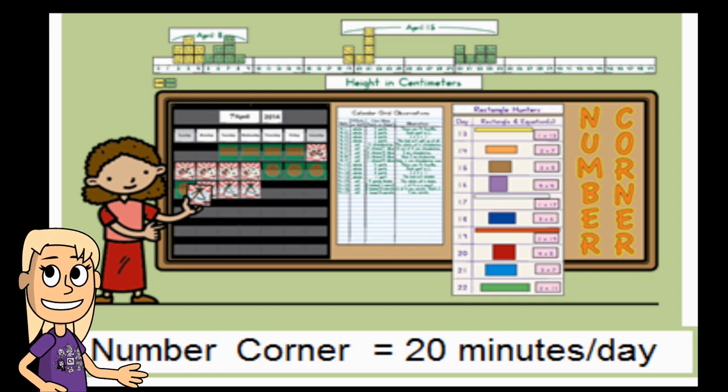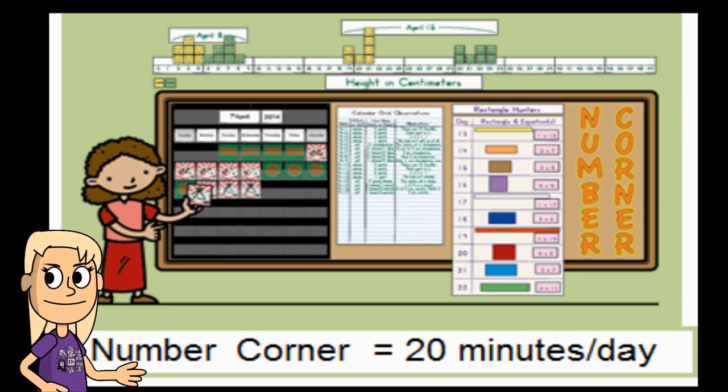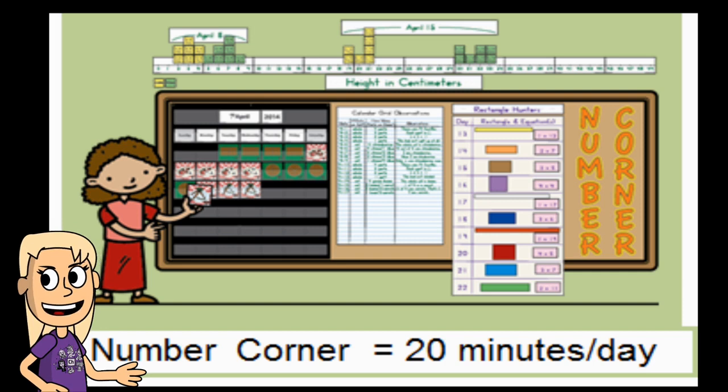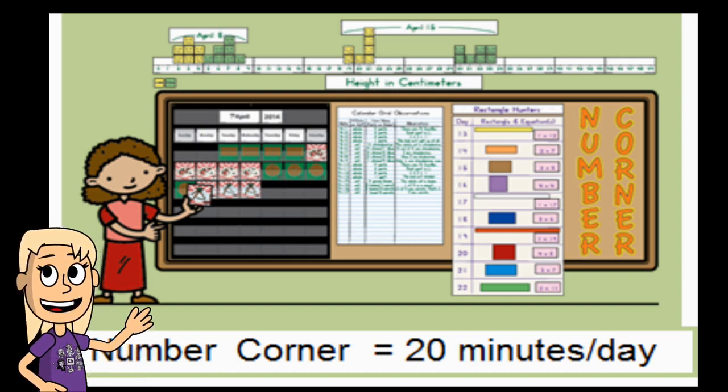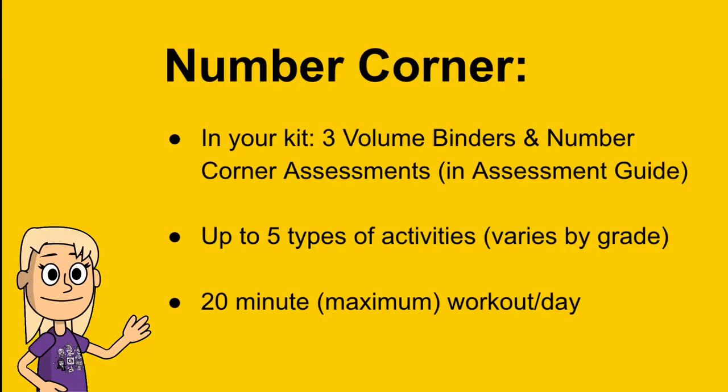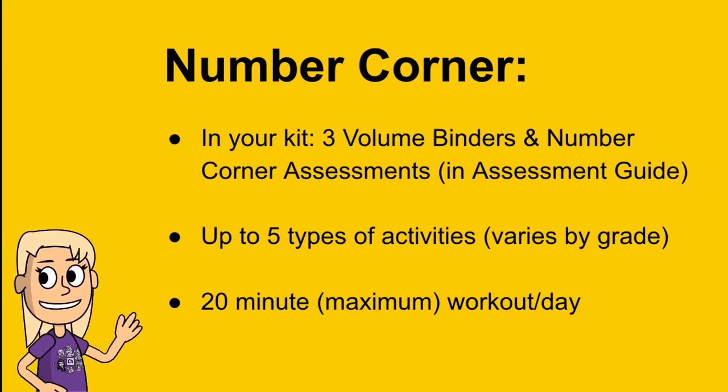Keep in mind, the idea is to do Number Corner for 15 to 20 minutes a day. The math wall shows the calendar, the vocabulary word chart, the calendar collector, and the calendar grid observation chart. Just remember that it does take up a lot of space. Number Corner in your kit, there are three volume binders and a Number Corner assessments, which is in what's called an assessment guide. Up to five types of activities, which will vary by grade, and 20 minute maximum work out a day. But keep in mind, there are some activities that might take just a little bit more time. But most take 15 to 20 minutes.